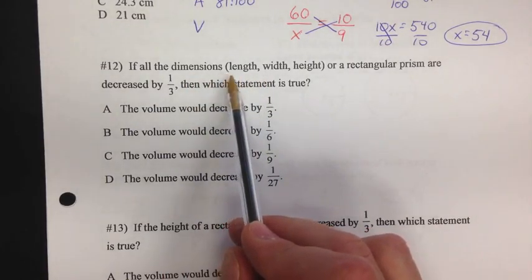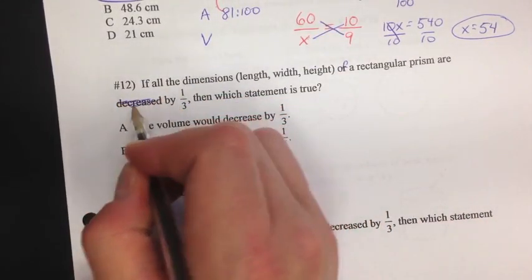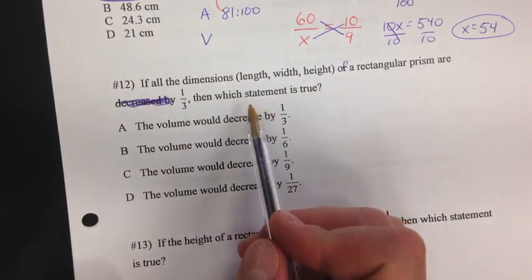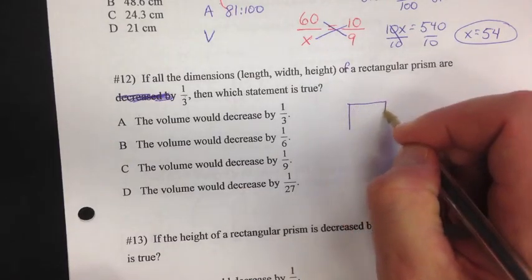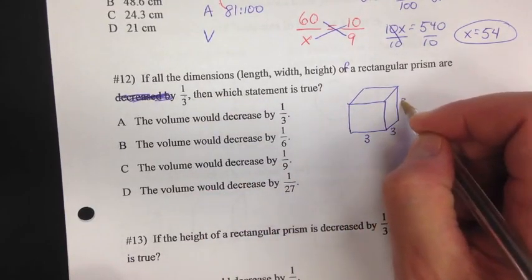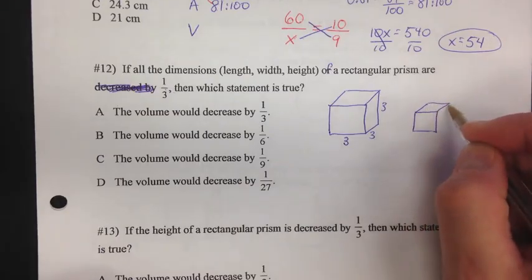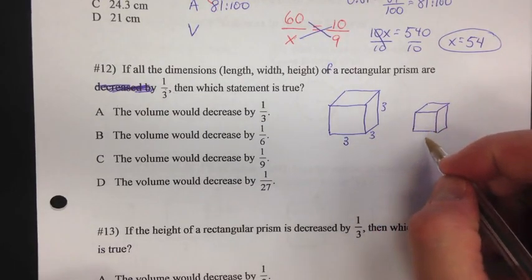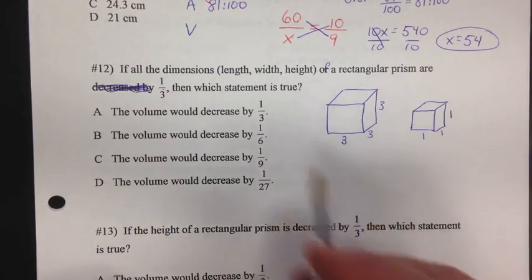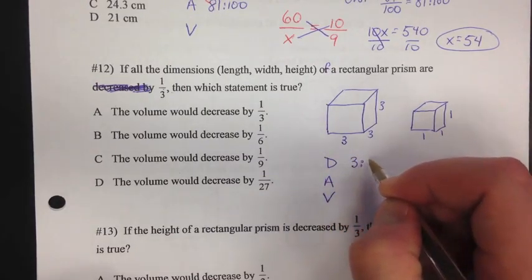Number 12 is similar but different. If all the dimensions — length, width, height — of a rectangular prism are one-third of the other object, which statement is true? Let's use easy numbers: a cube with dimensions 3 × 3 × 3. If you decrease it to one-third of the original size, one-third of 3 is 1, giving a 1 × 1 × 1 cube. The question is what happens to the volume — this is a DAV problem.